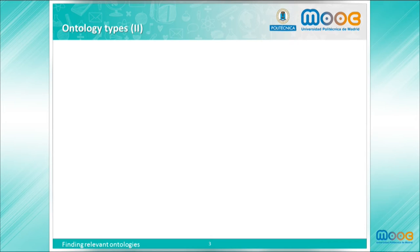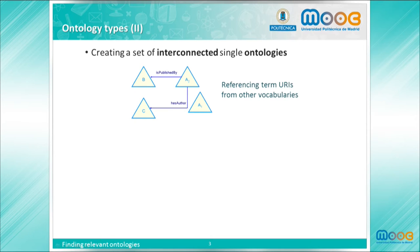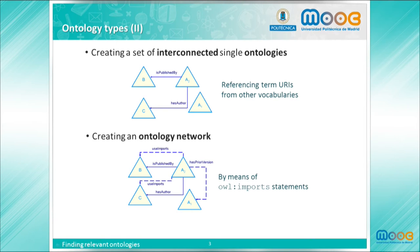Ontologies can also be divided into interconnected or single ontologies. When they are isolated, or referenced from other ontologies but no explicit metaproperties have been defined. On the other hand, an ontology network consists of interconnected ontologies by means of explicit metaproperties, like for example the import relationship.